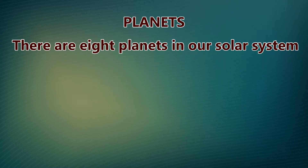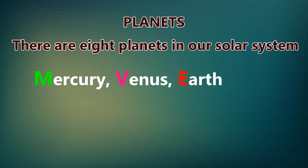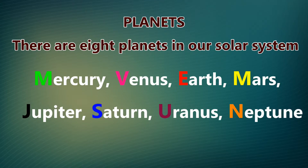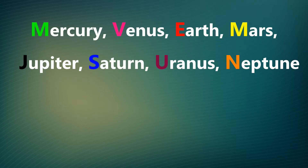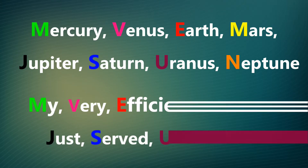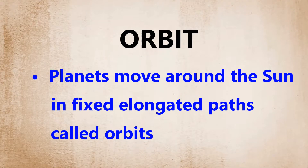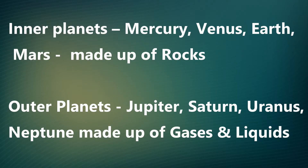There are eight planets moving around the Sun: Mercury, Venus, Earth, Mars, Jupiter, Saturn, Uranus, and Neptune. The chapter gives us a mnemonic to remember all of them — 'My Very Efficient Mother Just Served Us Nuts.' These eight planets move around the Sun in a fixed path, and these paths are known as orbits.